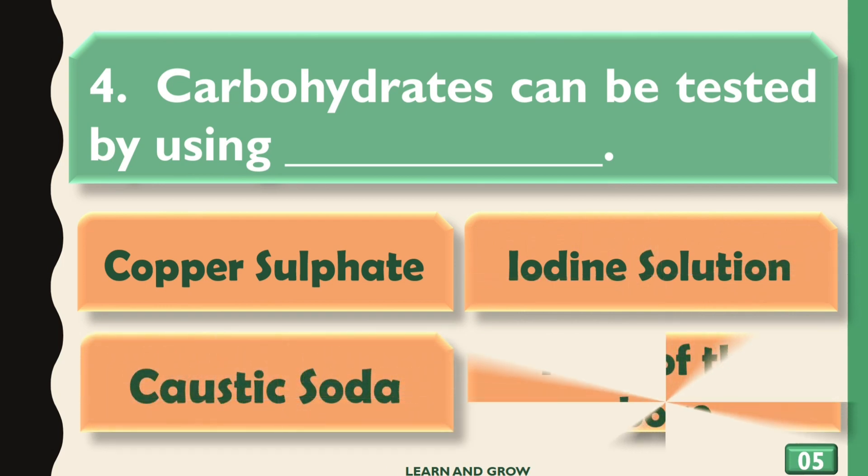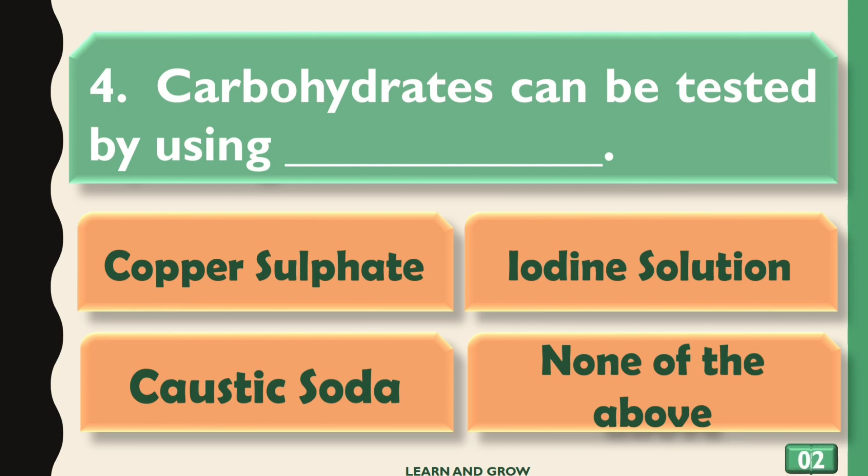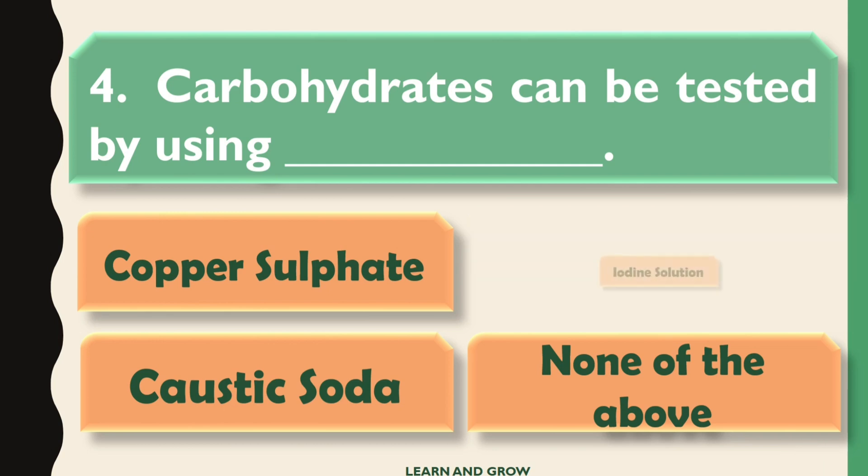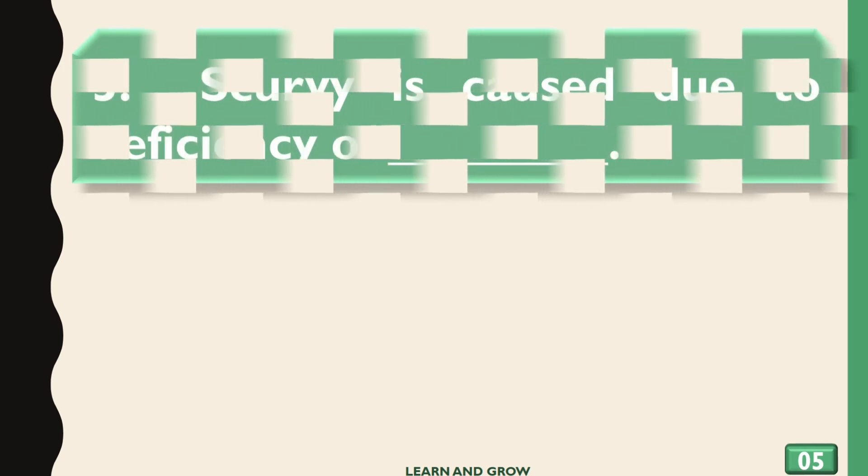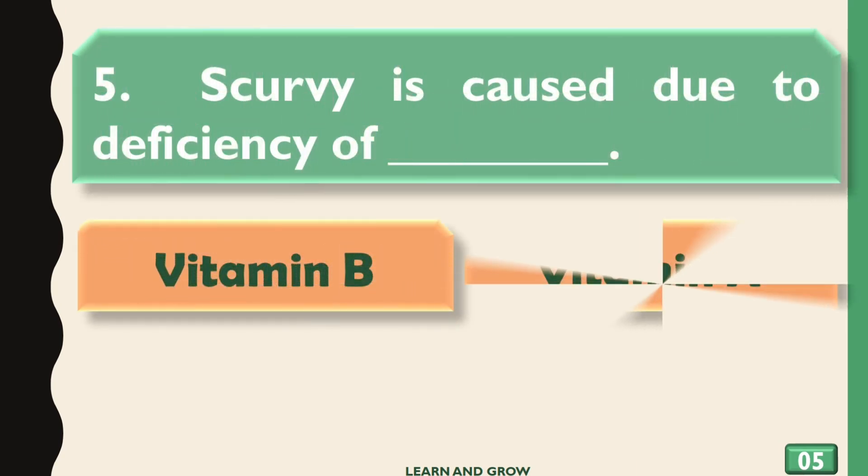Iodine Solution, C) Caustic Soda, or D) None of the above. The right answer is Iodine Solution. Scurvy is caused due to deficiency of: options are Vitamin B...